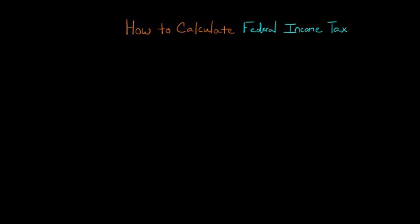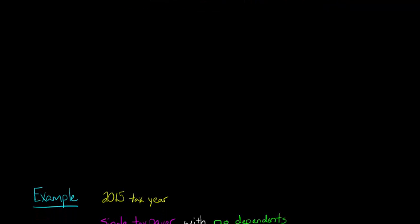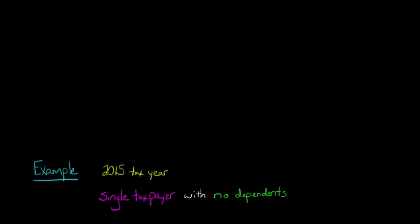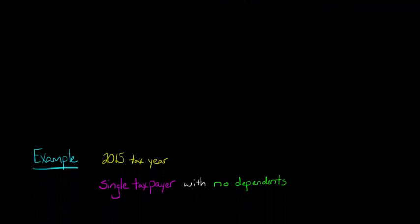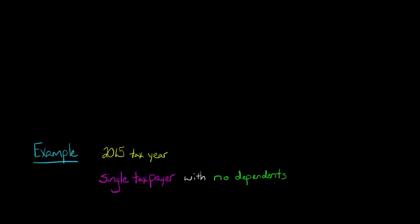In this video, we're going to talk about how to calculate federal income tax. In previous videos, I showed you the formula, and we talked about some things like deductions for AGI, deductions from AGI, credits, and so forth. I think to really understand, it's best to just jump in with an example.